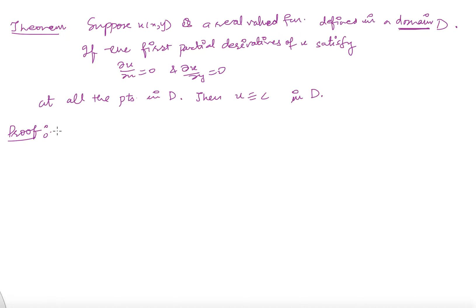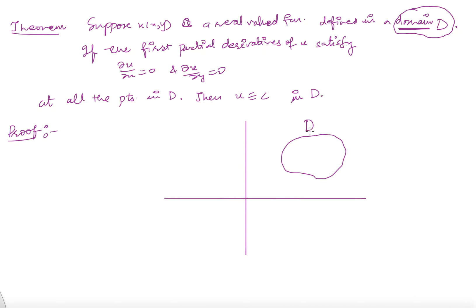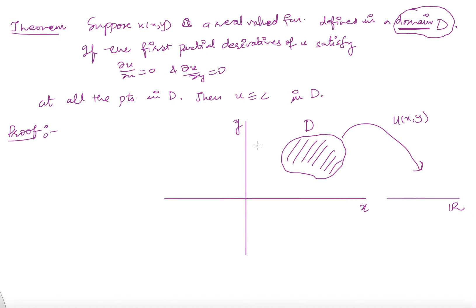So let us have the proof. We will use this domain. So what is the situation — we have this domain D here and the real axis R. We have a function from this domain, this is my x-axis, this is my y-axis. So you have this u of x comma y. Domain means this is an open connected set, which we defined in the last video. So now you are saying that ∂u/∂x equals 0.